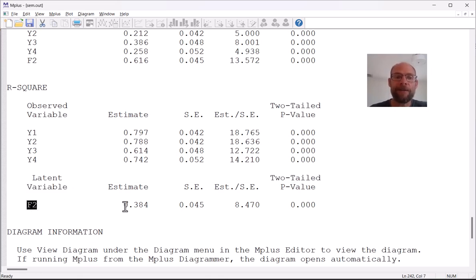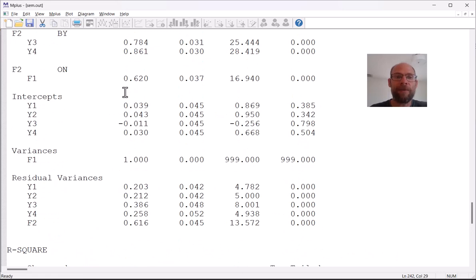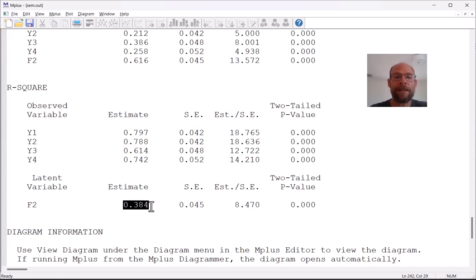We also get an R-squared value for the latent variable which here is f2. So f2 is our latent dependent variable and so we can see that the R-squared is 0.384 which means that 38.4% of the variance in f2 is accounted for by the factor f1 in a linear regression analysis. So there's a pretty sizable association between these factors as we saw before. The correlation was 0.62 and so this R-squared is this correlation squared in this case and so that results in almost 40% of the variance being accounted for in this model.